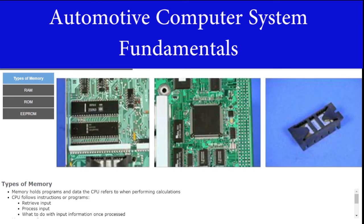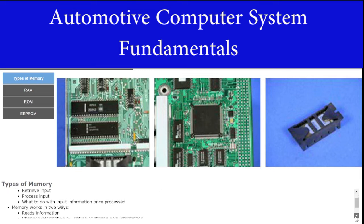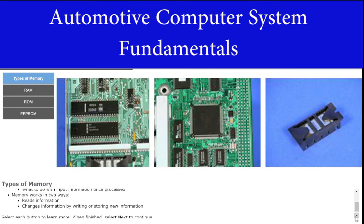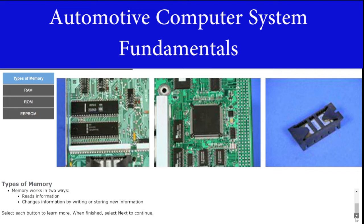A vehicle's computer memory holds programs and other data which the CPU refers to when performing applications. The CPU follows a set of instructions or programs which tells it when to retrieve an input, how to process the input, and what to do with the input information once it is processed. The CPU works with memory in two ways: it can read information stored in memory or change the information stored in memory by writing in or storing new information. Select each button to learn more. When finished, select Next to continue.